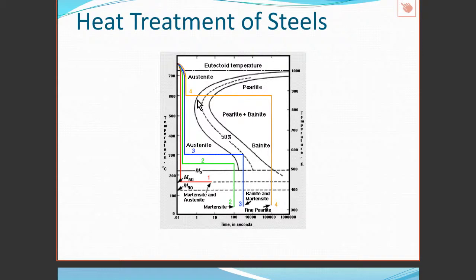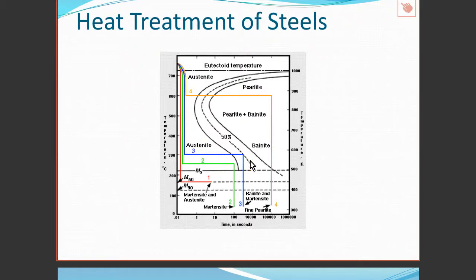If we perform a heat treatment that avoids the nose, we will not form pearlite or bainite. Instead, the austenite will be partially transformed into martensite. Heat treatments one and two avoid the nose. Heat treatment three results in 50% transformation into bainite — this is the bainite zone. The austenite that remains, which is not bainite, will then cross the martensite start line, giving a mixture of bainite and martensite.